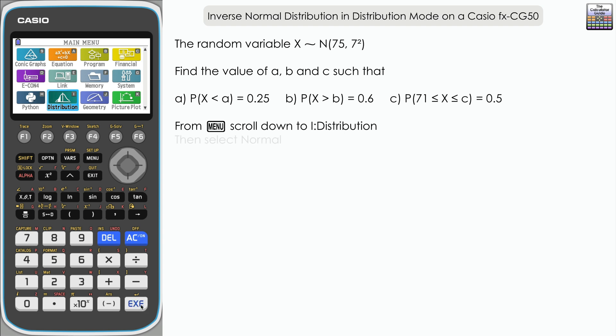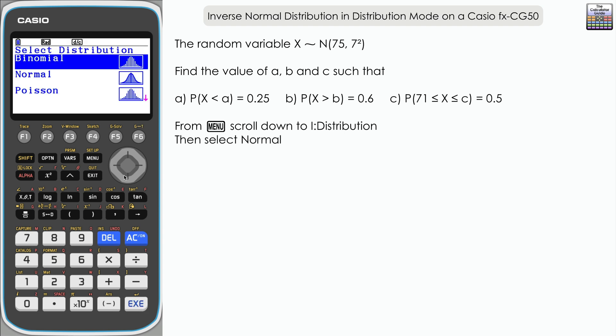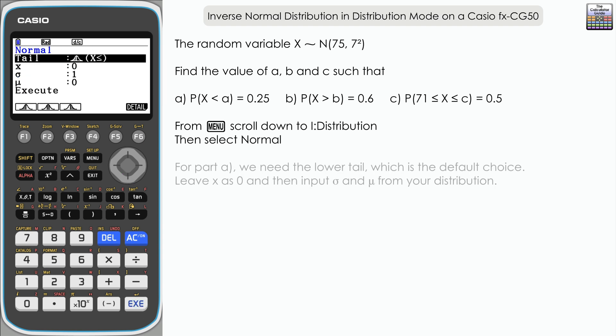For this question we need the normal distribution, so scroll down and select that option. For part a, we're looking for the probability that X is less than a, some value that we need to find, and that equals 0.25. Which value will give us that probability?